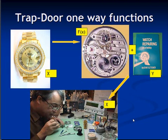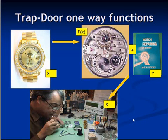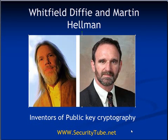So these are trapdoor one-way functions — it is very easy to go in through the trapdoor but very difficult to come back, unless you know some secret like a key. In one-way functions it is computationally impossible to recompute x given f(x), but in trapdoor one-way functions, given f(x) and some additional secret, it is finitely easy to compute x again.